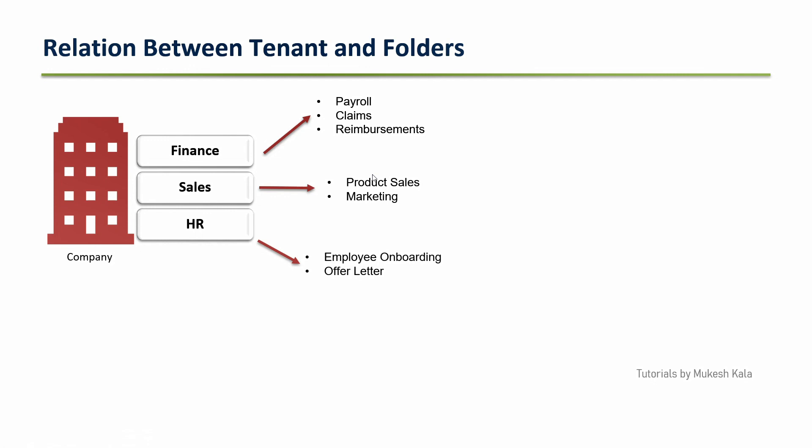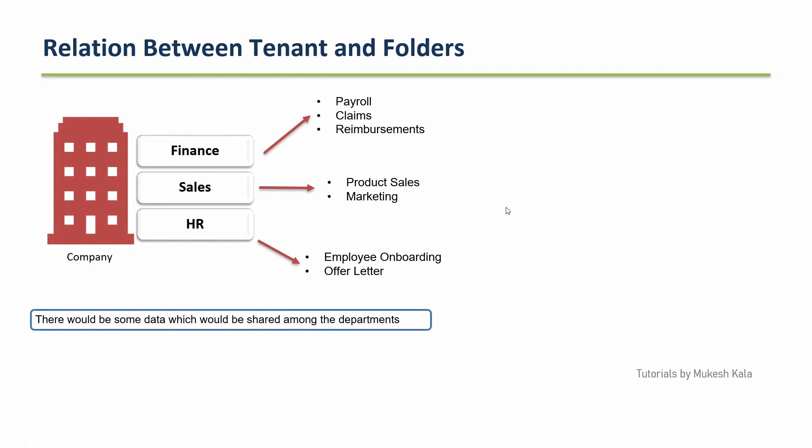Or would it be better to segregate — finance separate, sales separate, HR separate? Obviously the second option is better, because if you put everything in a single folder, all the assets get mixed up and it's difficult to manage. Also, there would be some data which the finance team does not want to share with HR, and HR would have some assets they don't want to share with sales. That said, there are some assets storing common company information that can be shared across all departments.